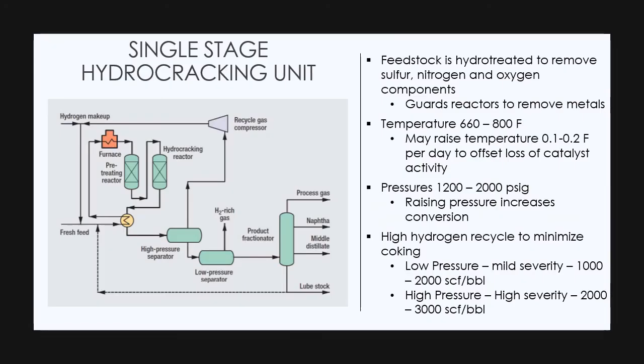After all our previous discussion on hydrocracking unit, we know all the theoretical components. Let's move on towards the single stage hydrocracking unit. This flow sheet which you are seeing is from Haldor Topsoe. Let me brief you on some important points about the single stage hydrocracking unit. First, the feedstock is hydro treated to remove sulfur, nitrogen and oxygen components. It guards reactors to remove metals. The temperature ranges between 660 to 800 degrees Fahrenheit.